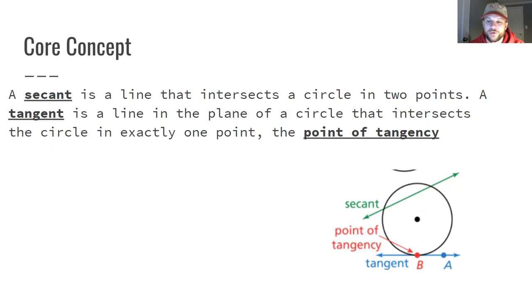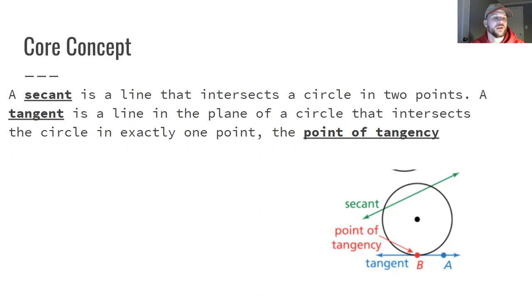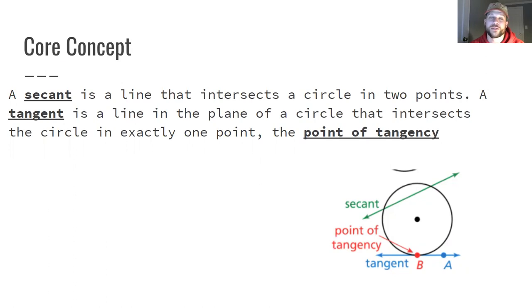Traveling through circles, you could have a line called a secant, which is a type of chord that travels through the endpoints and goes on to infinity, similar to a line versus a line segment from the first unit. Then you have tangents, which are lines that travel through only one point of the circle. In the diagram, the blue tangent line only intersects the circle at one point, point B, called the point of tangency.